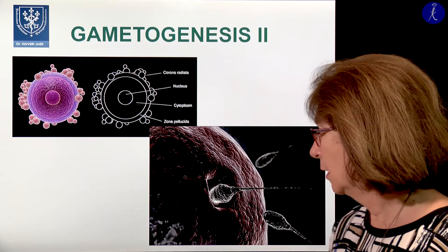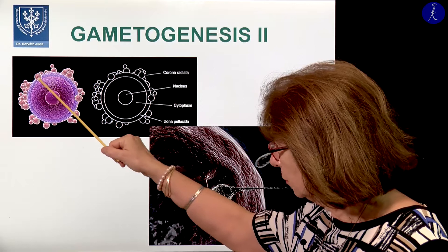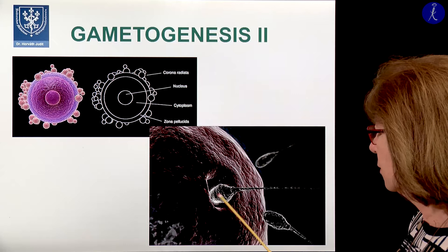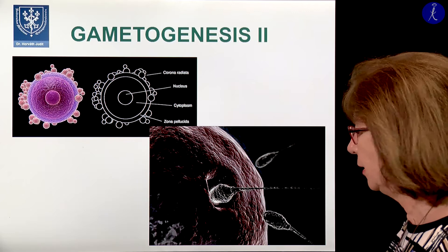On these first pictures, you see here an oocyte. That's the nucleus. This is a drawing, of course. On the surface, we have the zona pellucida. These are granulosa cells. And this is a true scanning electron microscopic picture of the surface of an oocyte — this is the surface of the zona pellucida.